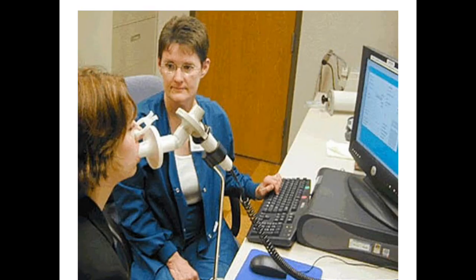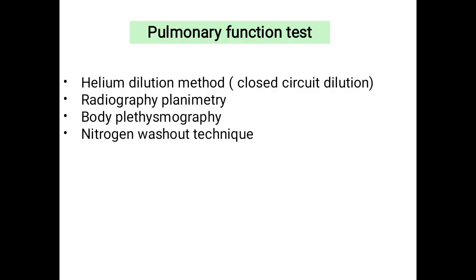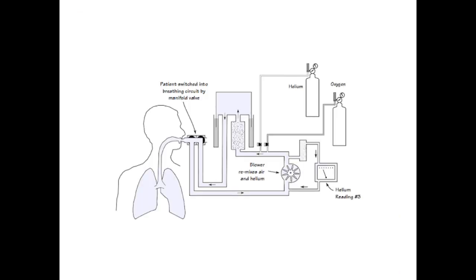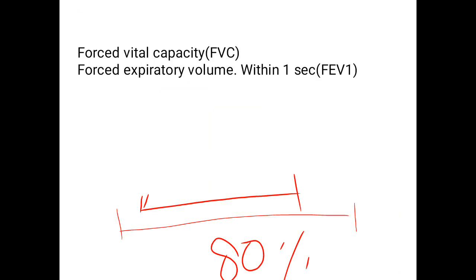We also obstruct the nose since our airways are continuous with both nose and mouth. Since residual volume cannot be measured by spirometer, other pulmonary function tests are used: the helium dilution method (closed circuit), radiography planimetry, body plethysmography, and nitrogen washout technique.